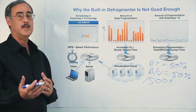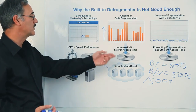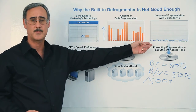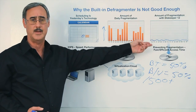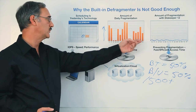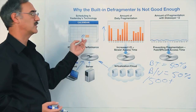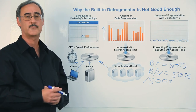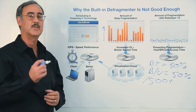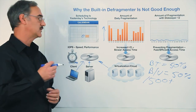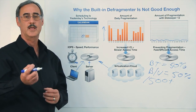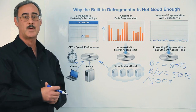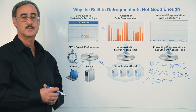So to me, that's clearly a reason why you want to prevent fragmentation from happening as opposed to attempting to fix it — that's a day late and a dollar short. Proactive prevention of fragmentation is the key to successful operations and improved response time to users.